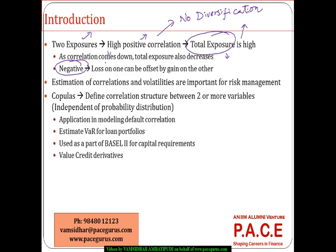That is one of the prime reasons I compute the correlation between a pair of exposures. From a risk manager's standpoint, how well I can estimate the correlation between variables and how well I can estimate the volatilities based on past data are critical aspects. These two key estimates — volatilities and correlation — are essential for effective risk management, including understanding how correlation between variables will change in future based on historical data.